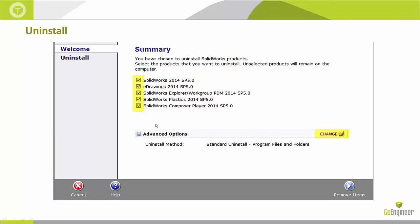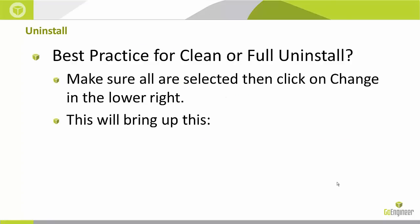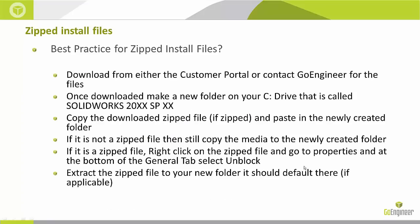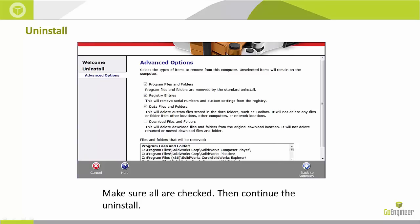The next important step is under Advanced Options — hit the Change button. Make sure all items are selected, then hit the Change button in the lower right. This brings up the Advanced Options screen. Program Files and Folders are automatically selected. Also select Registry entries and Data Files and Folders. If you want a totally clean uninstall, also select Download Files and Folders. Once done, click Back to Summary, and the entire installation will be uninstalled.